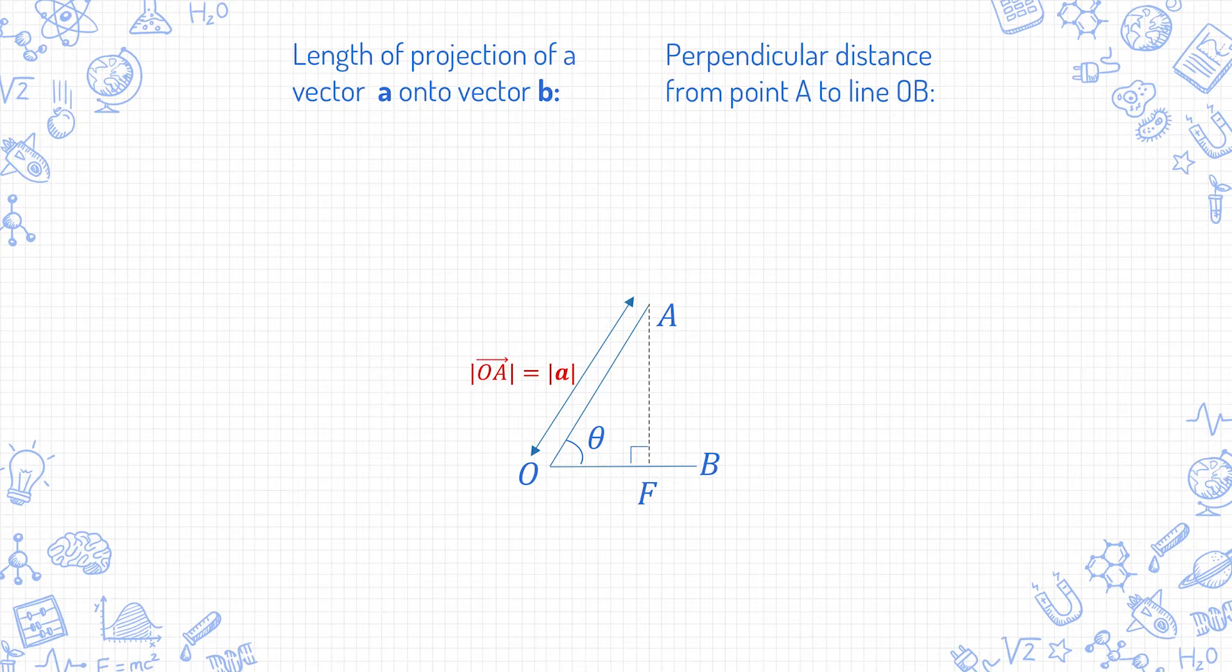In vectors terminology, OF is the length of projection of vector a onto vector b. It's like if OB is a wall and OA is an object, and you shine a torch vertically downwards, the length of the shadow cast is the length of projection.